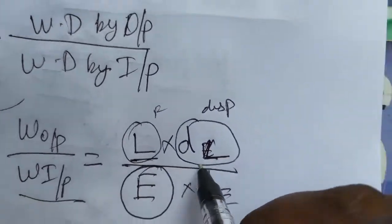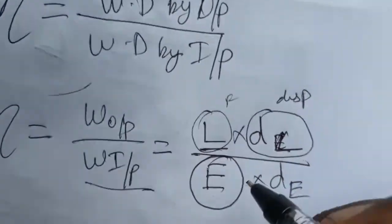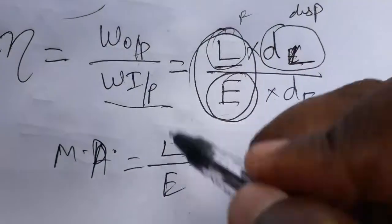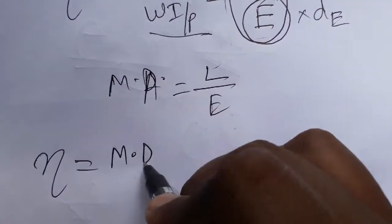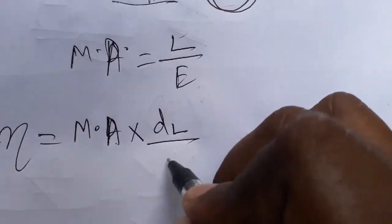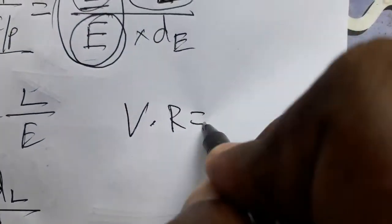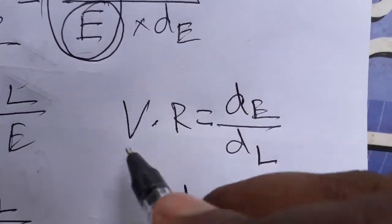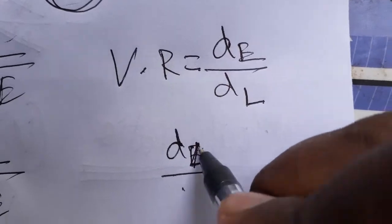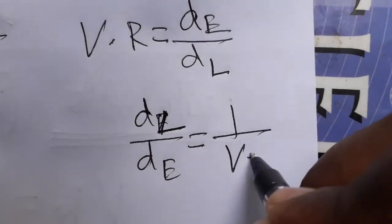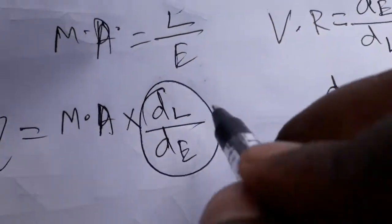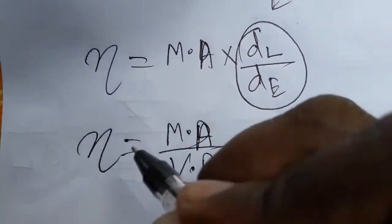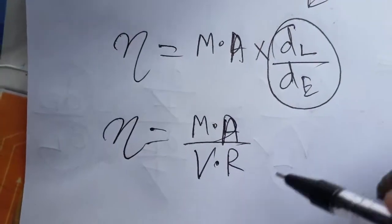So efficiency equals load into load displacement divided by effort into effort displacement. Since mechanical advantage equals load by effort, we substitute that. Efficiency then equals mechanical advantage multiplied by displacement of load divided by displacement of effort. Since velocity ratio equals displacement of effort by displacement of load, displacement of load by displacement of effort equals one divided by velocity ratio. Therefore, efficiency equals mechanical advantage divided by velocity ratio.